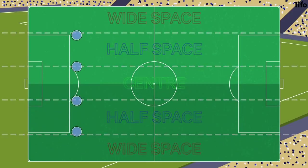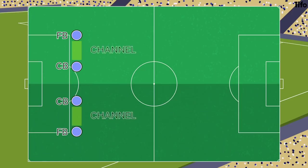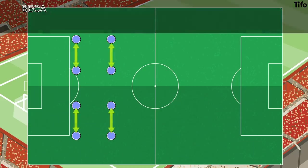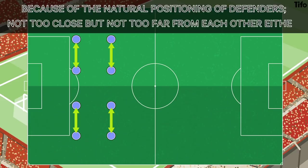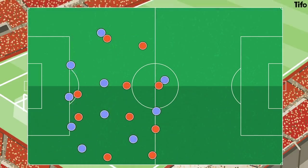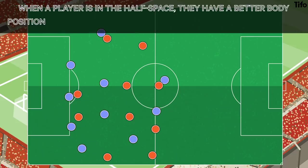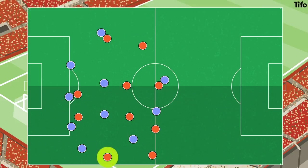There are two key reasons why the half-spaces are important. The first is that they often mirror the gaps between full-backs and centre-backs and are therefore similar to what are sometimes called the channels. Just as there is space vertically between the lines, there is often more space horizontally in the half-space because of the natural positioning of the defenders — not too close, but not too far from each other either. When a player is in the half-space, they have a better body position in relation to the goal and their passing options.